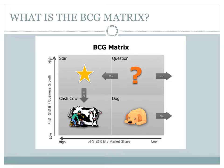According to this matrix, businesses could be classified as high or low according to their industry growth rate and relative market share. It can also determine what priorities should be given in the product portfolio of a business unit. To ensure long-term value creation, a company should have a portfolio of products that contains both high-growth products in need of cash inputs, and low-growth products that generate a lot of cash.